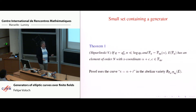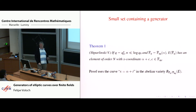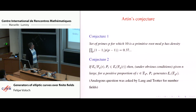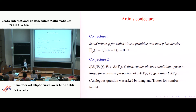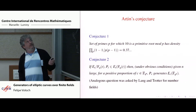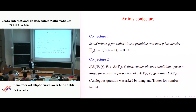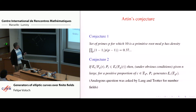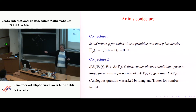So this theorem gives a solution to a weakening of our original problem. We don't find a generator — we just say there is a generator in this small set. Now I want to turn to Atkin's conjecture. Atkin's conjecture is this very old conjecture of Emil Artin, probably 80 years old now. It's been proved under GRH but remains open unconditionally. It concerns the set of primes p for which 10, or any given number, is a primitive root mod p — giving a positive density set of primes.